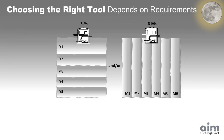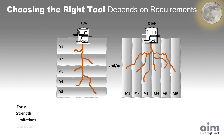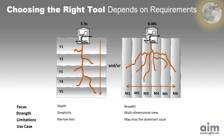There's more than one way to dig for the truth. This image shows two powerful lenses for root cause analysis. The Five Whys drills deep down one path. The 6M method scans across multiple dimensions. Both aim to get to the root, but each reveals a different part of the underground story. Because sometimes one why isn't enough, and one root isn't the whole system. In brief: use Five Whys for quick problem solving; use 6M for complex or recurring failures.